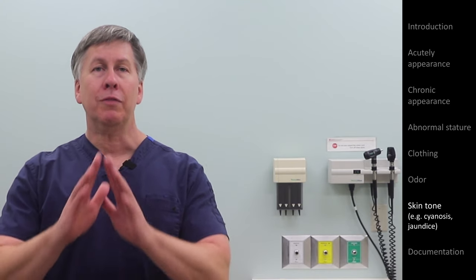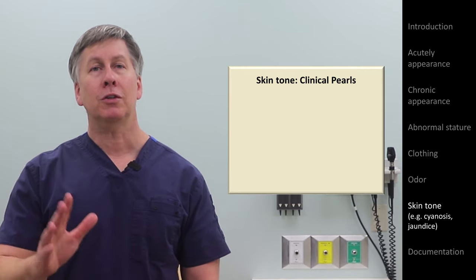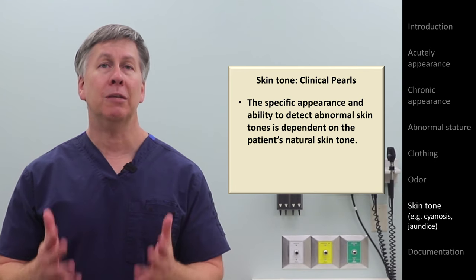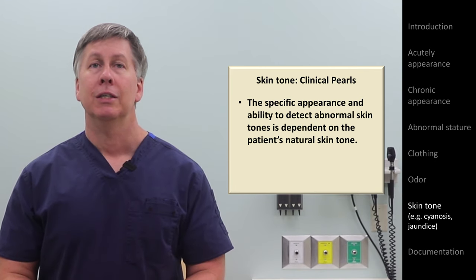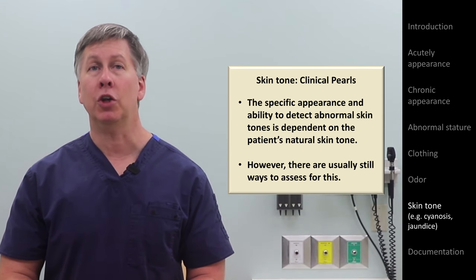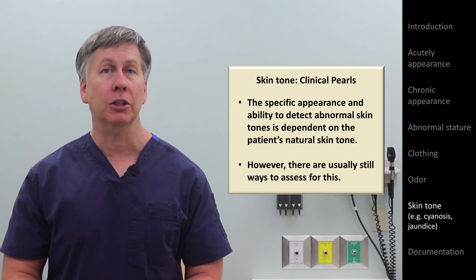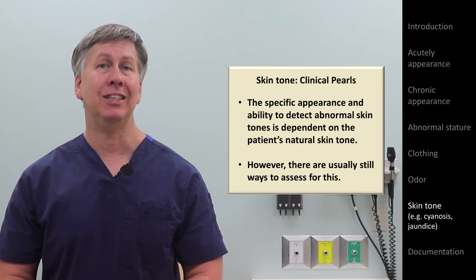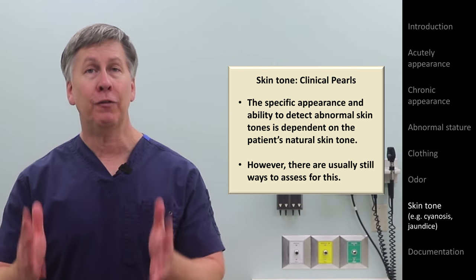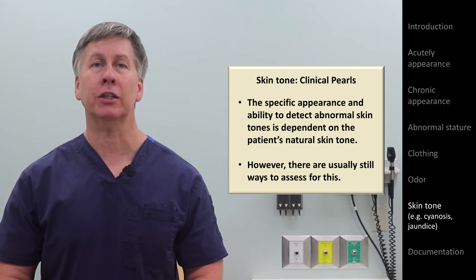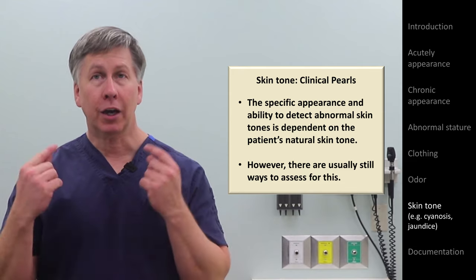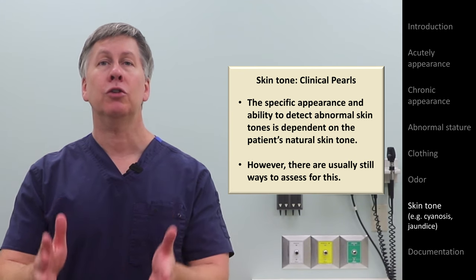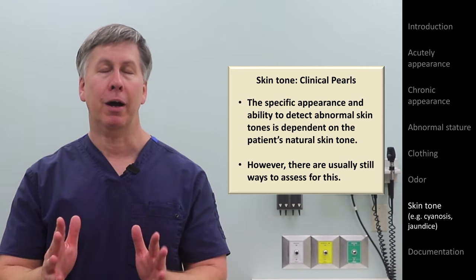An important note on all these skin tone abnormalities: the ability to detect them depends on the individual's natural skin tone — it's harder to see most of these in dark-skinned individuals. Sometimes there are other ways to tell. Jaundiced patients will also develop yellow eyes known as icterus, present regardless of skin tone. Pale conjunctiva are easy to see in all people if you remember to look. Cyanosis in dark-skinned people may also be easier to note in the conjunctiva, tongue, palms, and nail beds — but you need to remember to look if you are suspicious.